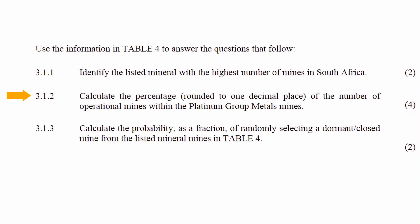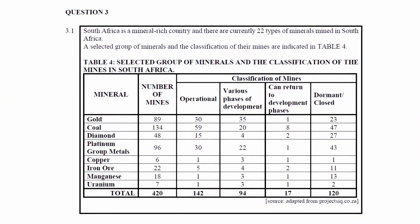In question 3.1.2, you have to calculate the percentage, rounded to one decimal place, of the number of operational mines within the platinum group metals mines. The number of platinum group metals mines that are operational is 30, while the total number of platinum group metals mines is 96.